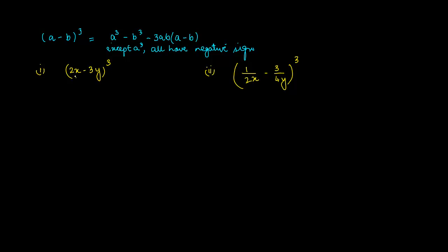Now in this case, if you notice, the value of a is equal to 2x, and because this is minus, the value of b is equal to 3y.